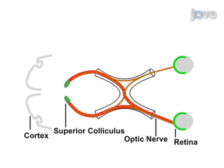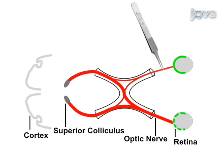As a second step, an optic nerve crush injury is made on day four to cause optic nerve degeneration, which will lead to a gradual death of the retinal ganglion cells. On day 11, the retina is dissected in order to investigate retinal ganglion cell survival.